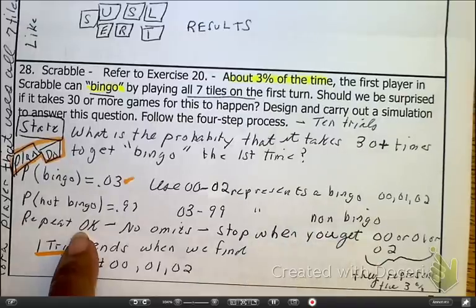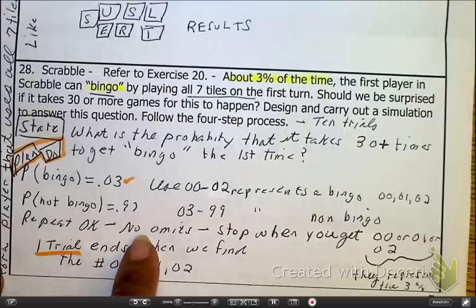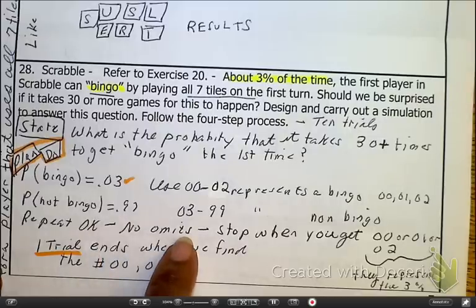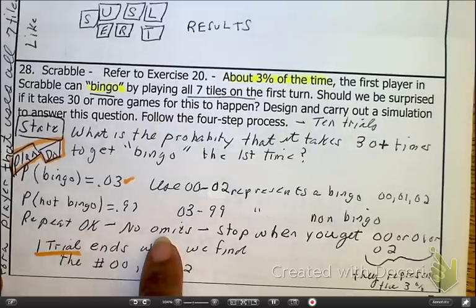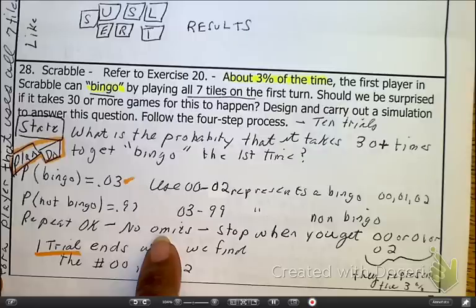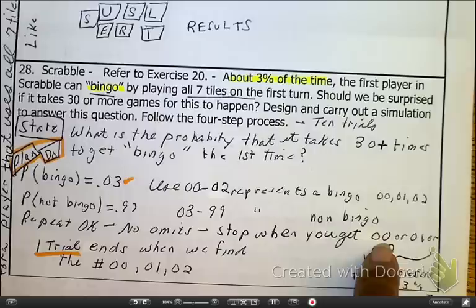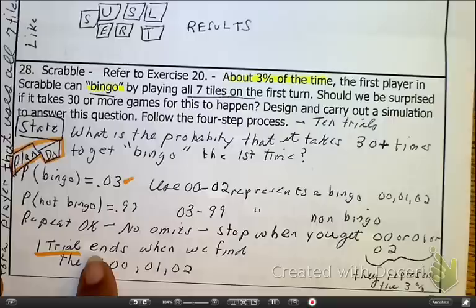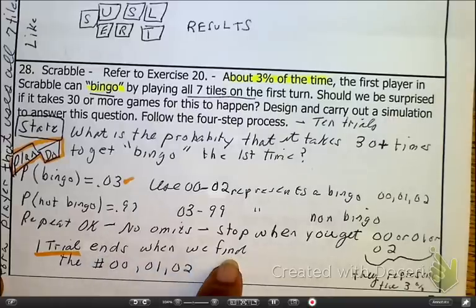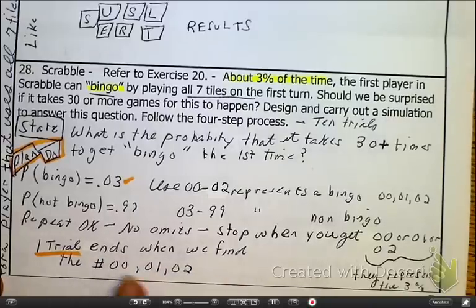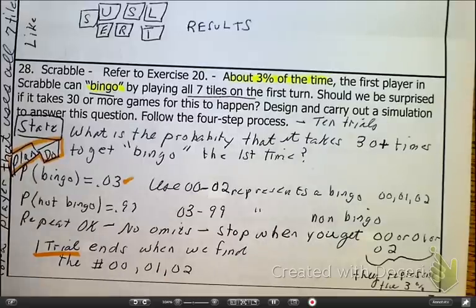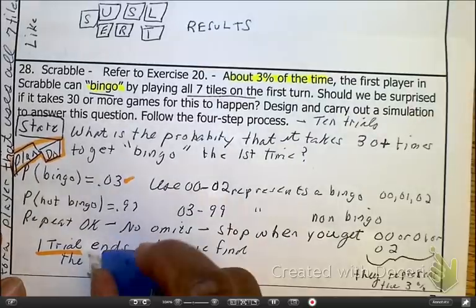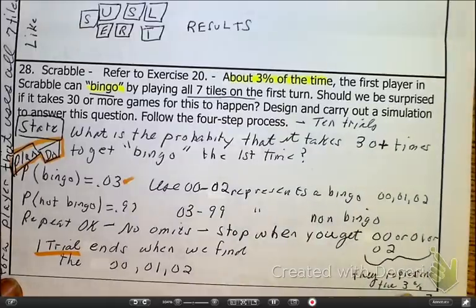Not a bingo is 97%, and 97% means it's 0-3 to 99 for it to be a non-bingo. So repeats are okay. There are no omits. We stop when we get either 0-0, 0-1, or 0-2. Now, this is something that this book did not talk about, the word trial. The trial ends when we get or find a 0-0, a 0-1, or a 0-2. Because remember, those numbers represent the 3%.